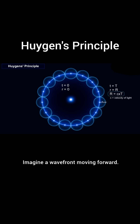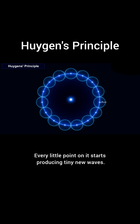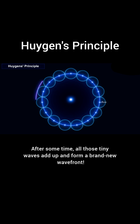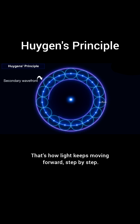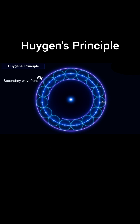Let's picture this. Imagine a wavefront moving forward. Every little point on it starts producing tiny new waves. After some time, all those tiny waves add up and form a brand new wavefront. That's how light keeps moving forward, step by step.